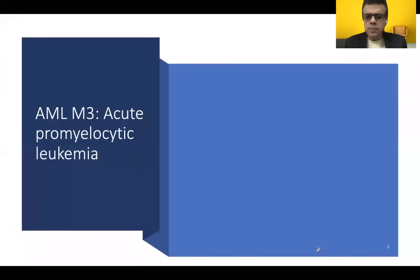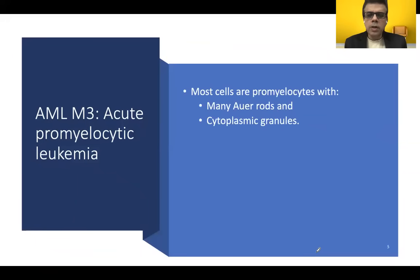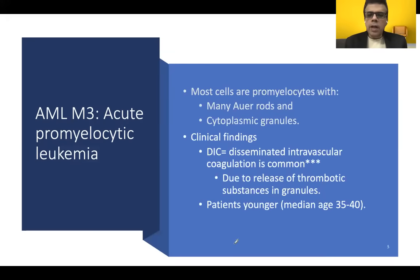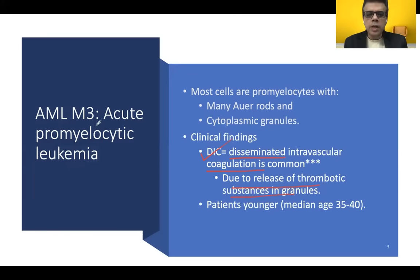Coming to AML M3 — here a majority of the cells are promyelocytes, as the name acute promyelocytic leukemia depicts. The important thing to remember is that the leukemic promyelocytes release lots of thrombotic substances from their granules into the bloodstream, which induces DIC. DIC is very commonly associated with AML M3. You will see lots of promyelocytes with Auer rods and cytoplasmic granules, and patients are usually younger, in the age group of 35 to 40 years.